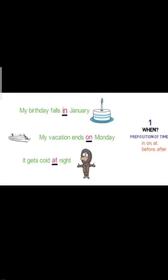Next example: It gets cold at night — raat ko bahut thand ho jaati hai. Toh kab thand hoti hai? At night. Here 'at' is used as a preposition of time — ye pata chal raha hai ki kab thand hoti hai, woh hoti hai night ko. So in, on, and at are prepositions of time.